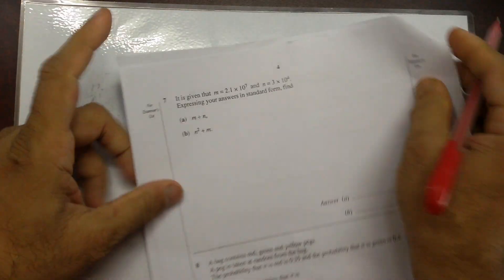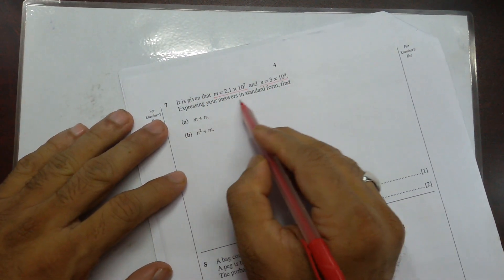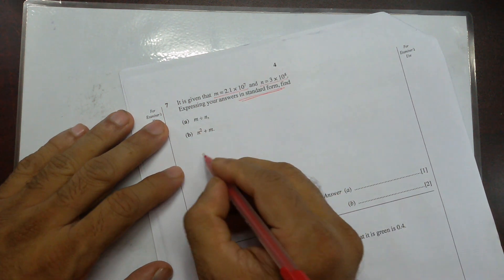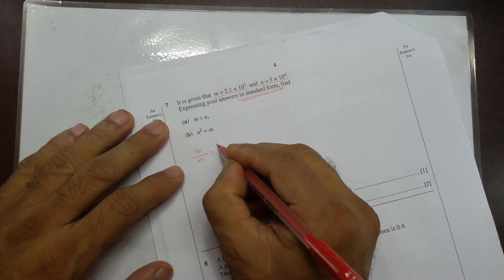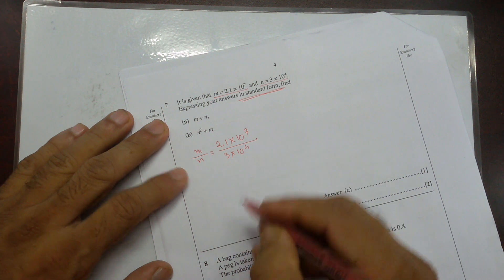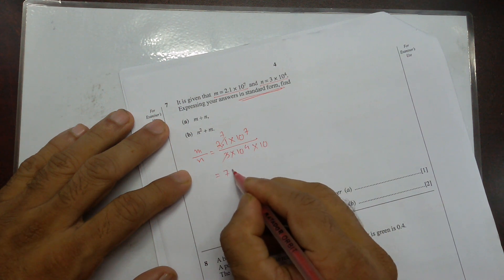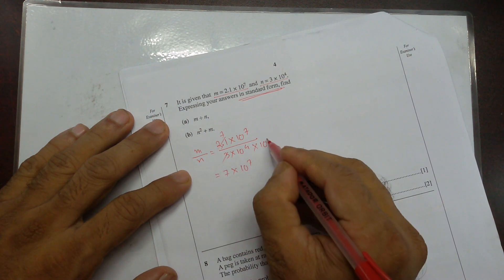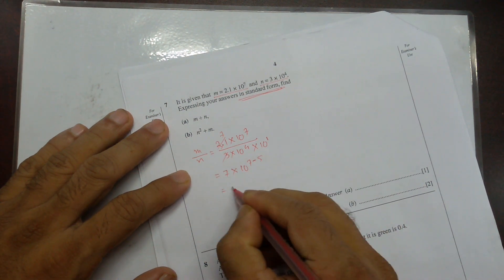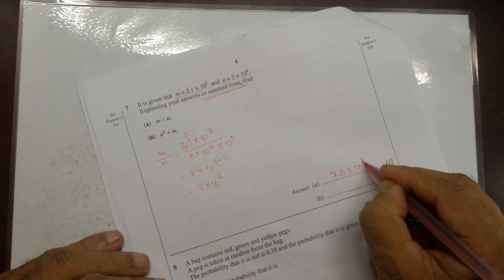Next one is question number 7. It is given that M equal to 2.1 times 10 to the power 7 and N is 3 times 10 to the power 4. Express your answer in standard form. So M divided by N: 2.1 times 10 to the power 7 divided by 3 times 10 to the power 4. To take this one off, I can multiply this by 10. So 3, 7s. So it's 7 times 10 to the power 2. And in standard form, we write down 7.0 times 10 to the power 2.